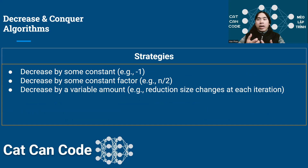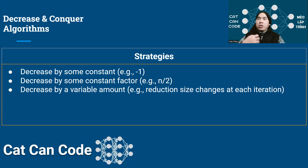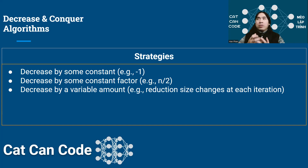Let's look at the three different strategies for decrease and conquer algorithms. The first strategy is decrease by some constant — for example, at each iteration you reduce the subspace or the problem size by one. Decrease by some constant factor is the second strategy, in which at each iteration you reduce the problem size by half or by three times, and so on. The third strategy is that at each iteration, you decrease the size of the problem by a variable amount, which means the reduction size changes over time. So these are the three strategies.